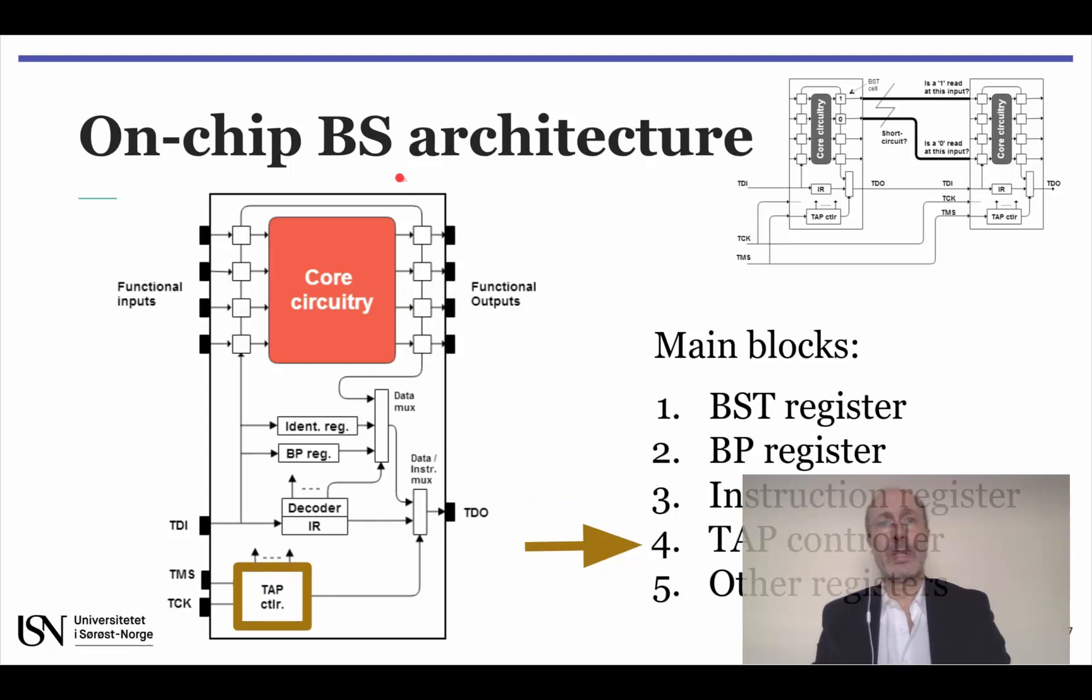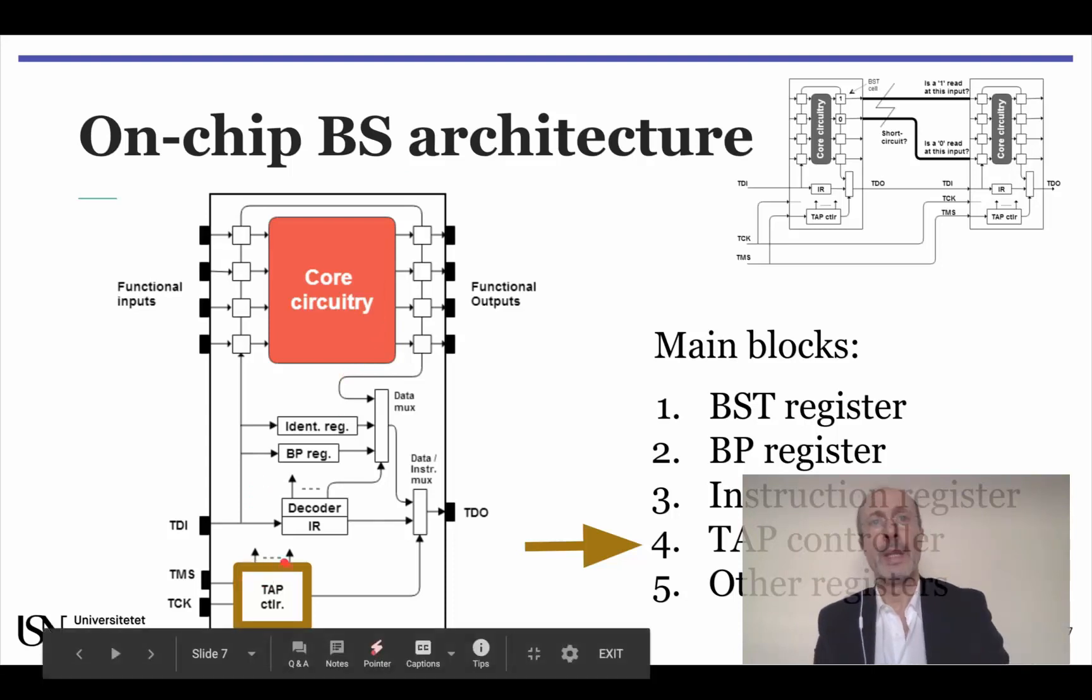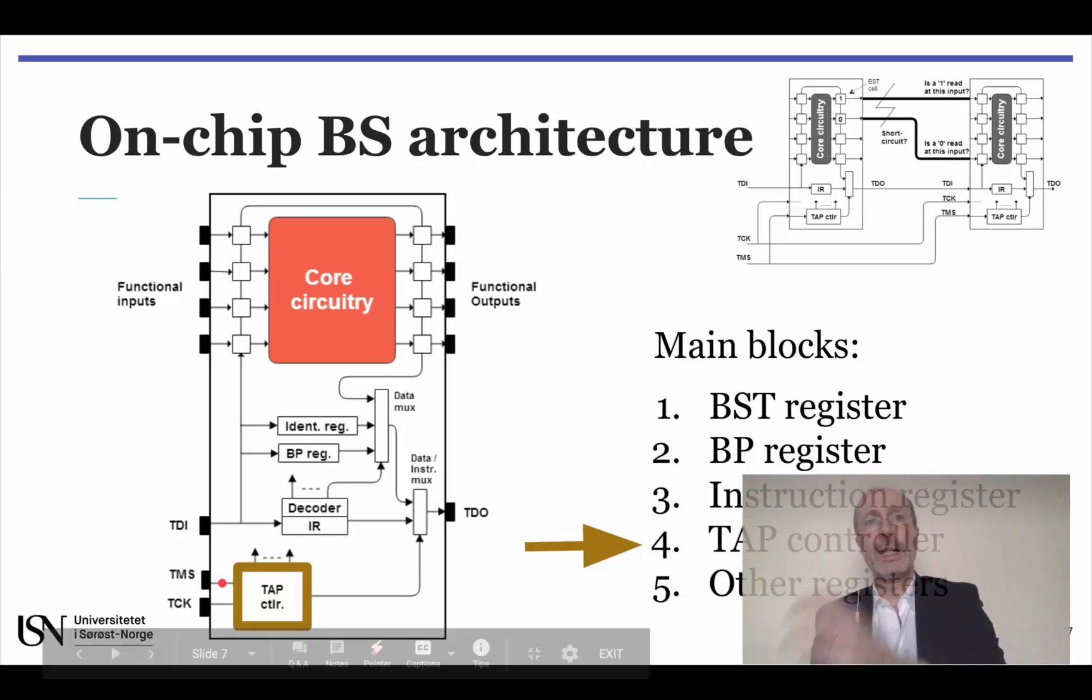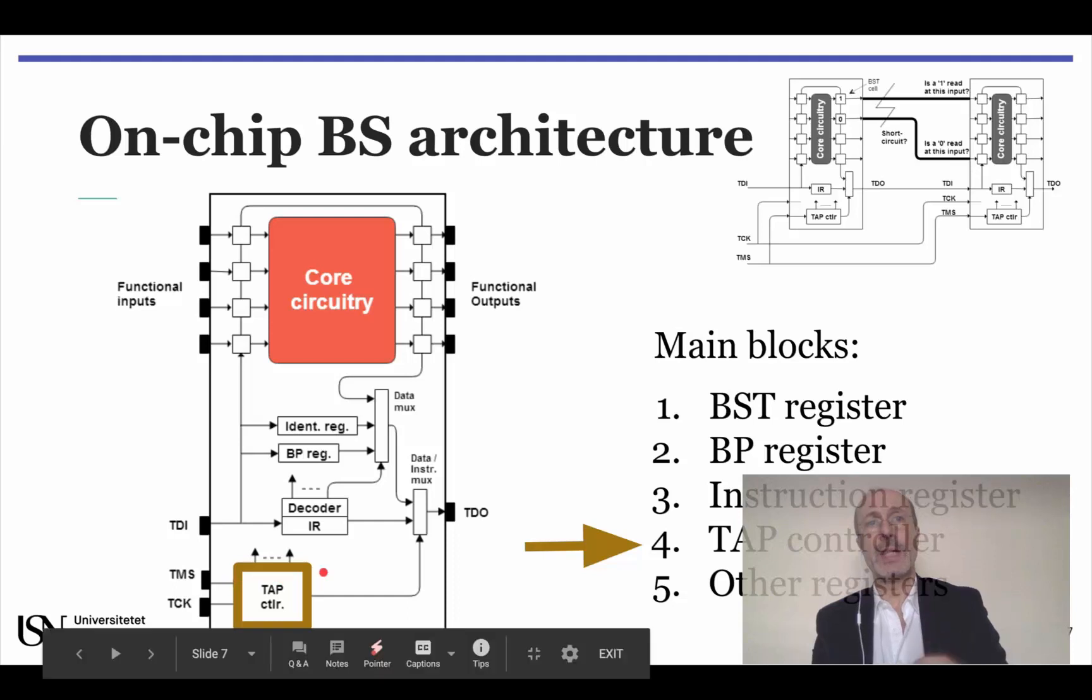Well, the data instruction multiplexer is controlled by this block called the test access port controller or TAP controller. This is indeed a small finite state machine that is controlled by an external input called TMS or test mode select. In the very beginning, what we have to do is to drive an appropriate sequence of ones and zeros to TMS.